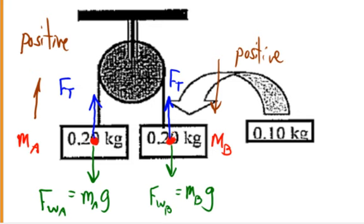In a similar way, the string tension has got to be something more than 2 newtons, because the object on the left-hand side is going to accelerate upward. If it accelerates upward, then the tension has got to be more than the weight on the left-hand side. Since the weight on the left-hand side is 2 newtons, the string tension has got to be more than 2 newtons. So already, I have a way of checking my final result. The string tension has to be more than 2 newtons but less than 3 newtons.